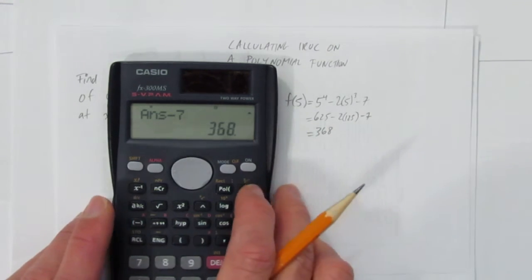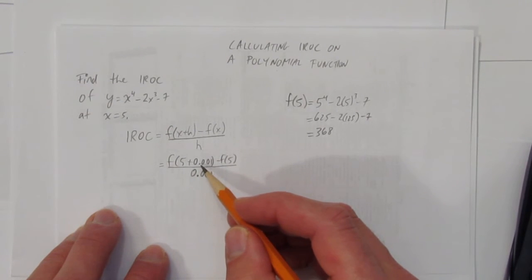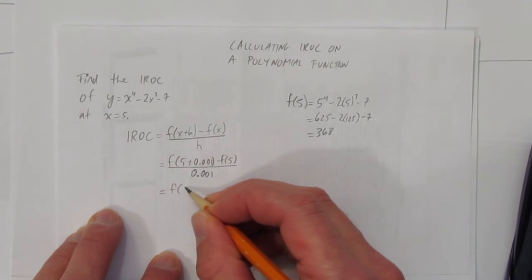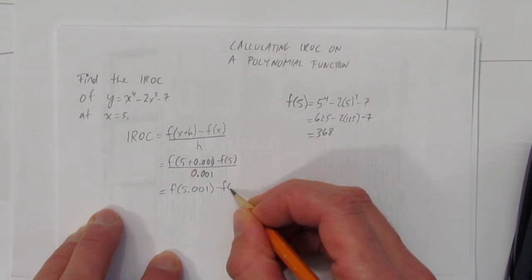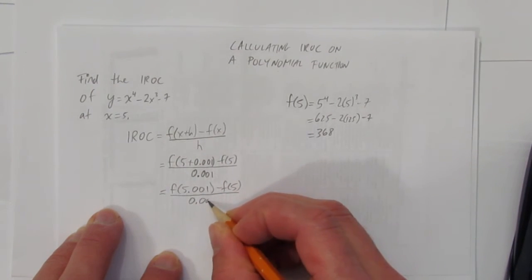Now, we want to calculate what's the value of the function at 5.001. If it helps, 5 plus 0.001 is just 5.001. That's the next value we want to calculate. What's the value of this function just a little bit past 5?